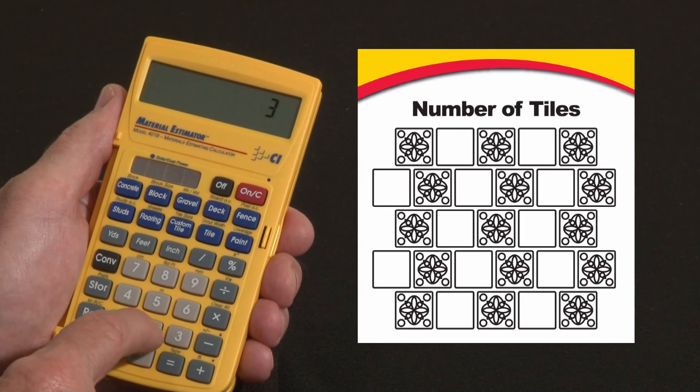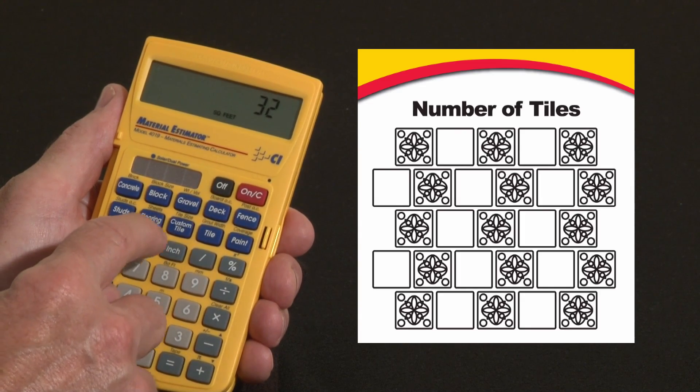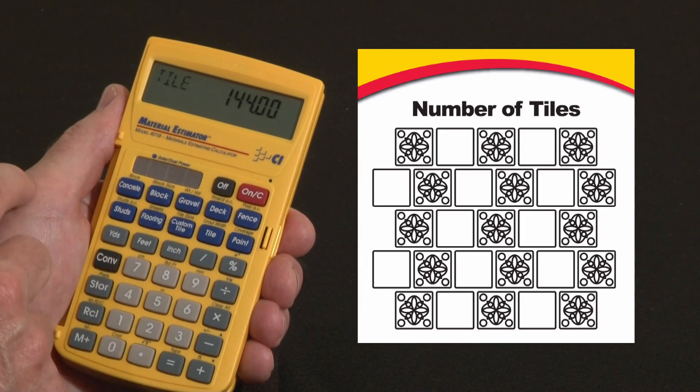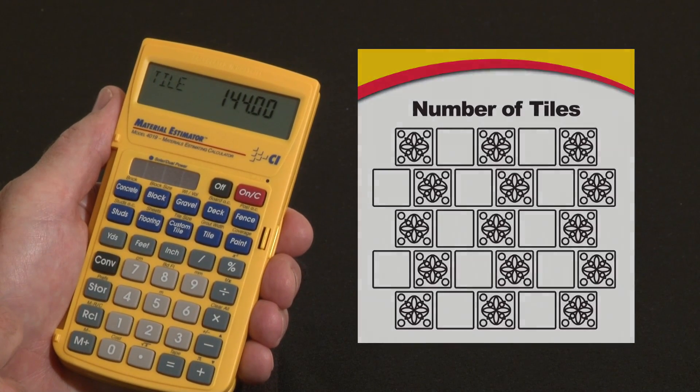So now I've got that 32 square foot countertop, now I just hit tile, and I'm going to need 144 of those custom size tiles.